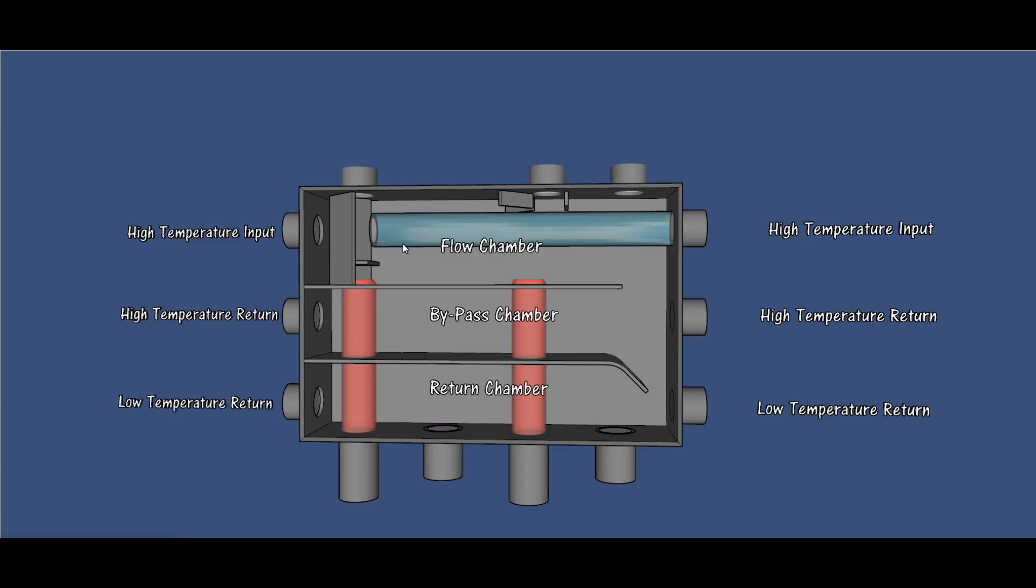Very simply, top chamber is the high temperature flow input from any appliance. Mid chamber, or bypass chamber, would be say for instance a conventional oil boiler, conventional gas boiler, or maybe a solid fuel appliance.